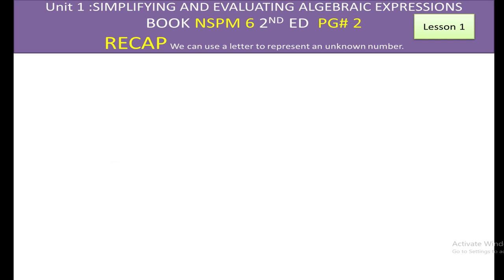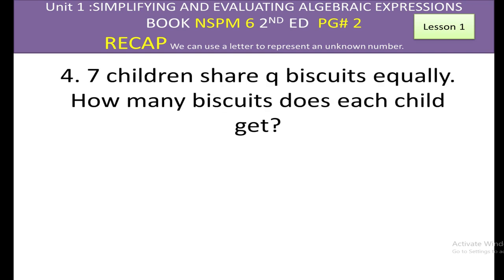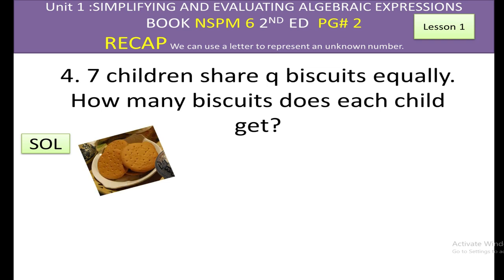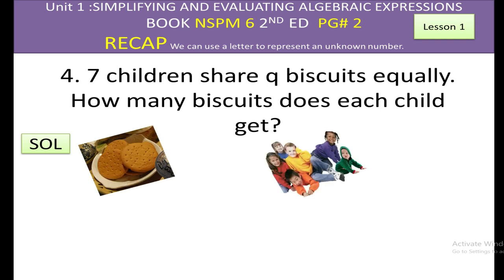Question four: Seven children share some biscuits equally. How many biscuits does each child get? The solution: we have some biscuits — the number of biscuits is q — and seven children. We need to distribute these biscuits equally among the seven children.